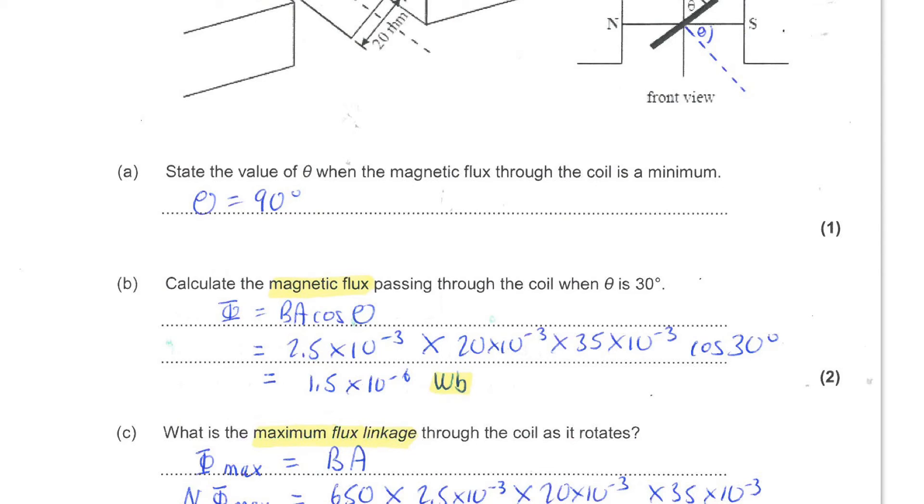And that gives us an answer of 1.5 times 10 to the minus 6 and you need the units of Weber.